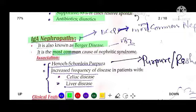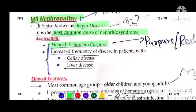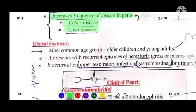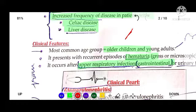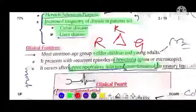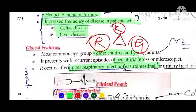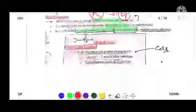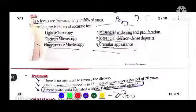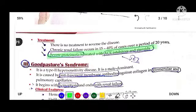IgA nephropathy, also known as Berger's disease, is the most common cause of nephritis syndrome and is associated with Henoch-Schönlein purpura, increased frequency in patients with celiac disease, and liver disease. It occurs in older children presenting with episodes of hematuria following upper respiratory tract and GI tract infections. Renal biopsy shows mesangial widening, proliferation, and granular appearance. Treatment includes ACE inhibitors and steroids.